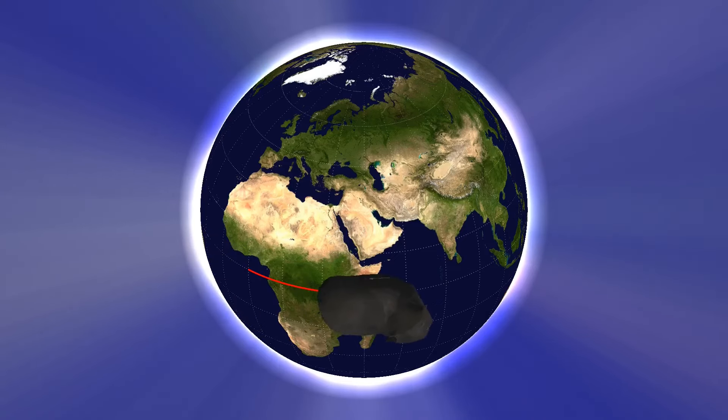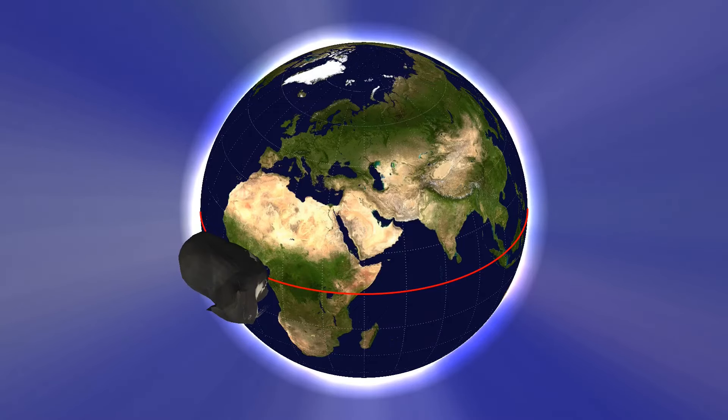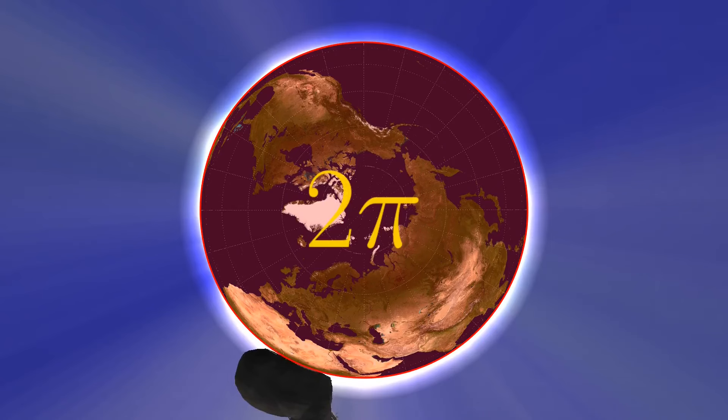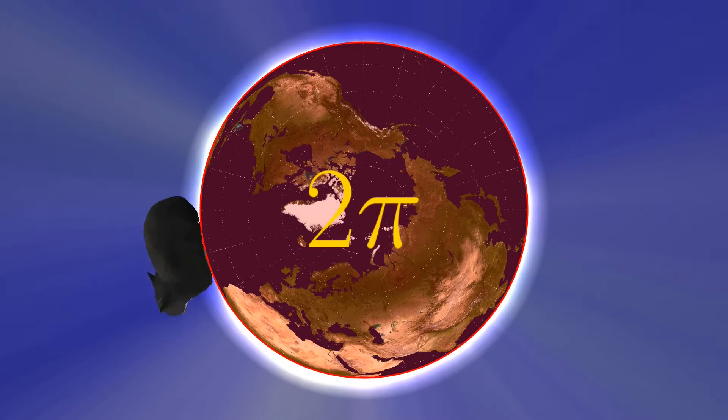Imagine the cat moving around the equator of a sphere, creating a loop. What is the area inside this loop? It is half of the whole sphere, so it is 2pi.